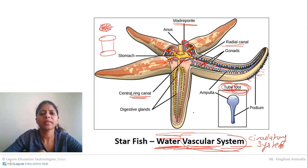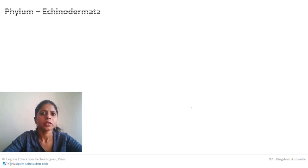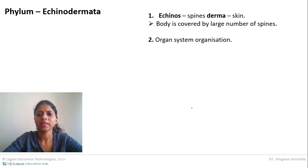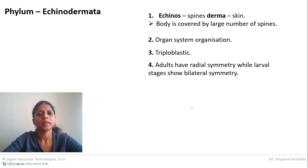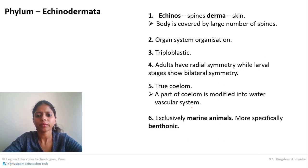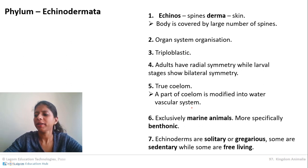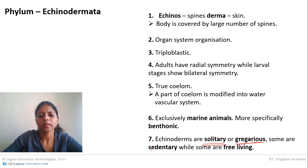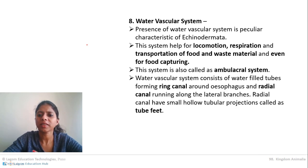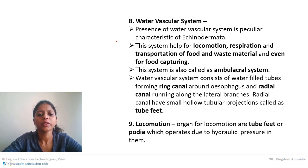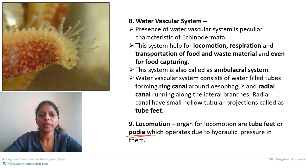To summarize the characteristics of Echinodermata: spiny skin; organ-system organization; triploblastic; radial symmetry in adults, bilateral symmetry in larval stages; true coelom; exclusively marine and mostly benthic; may be solitary or gregarious; some sedentary like sea lily, some free-living like starfish. Locomotion is done with the help of tube feet, also called podia. This picture shows each tube foot coming out of the starfish for locomotion.